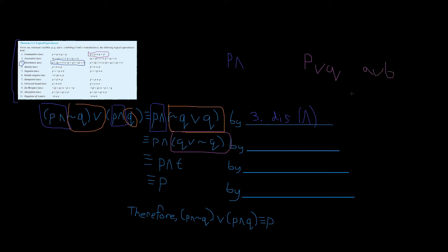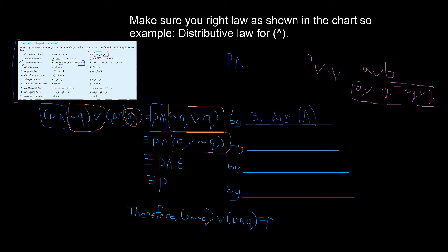In this case it says q OR negation q, which is logically equivalent to negation q OR q. Everything has a commutative law when it has the connectors OR and AND — if it has OR and AND it has a commutative property. So what we do is use number one, the commutative property for OR.